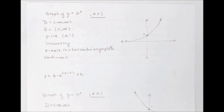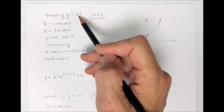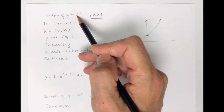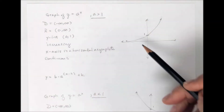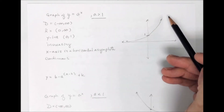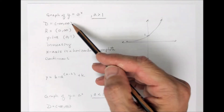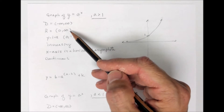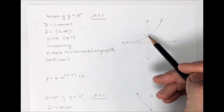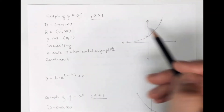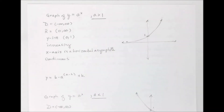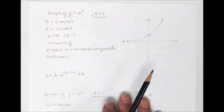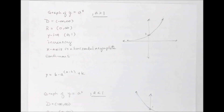If a is greater than 1 — meaning the base is a 2, 3, 4, or 5 — the graph increases; it goes up from left to right. The domain for exponential functions is all real numbers. The range is just the positive numbers, because any positive number raised to a power is a positive number. It can't be 0; it can't cross the x-axis. In fact, the x-axis is a horizontal asymptote. And it's continuous — there aren't any breaks, gaps, or holes.